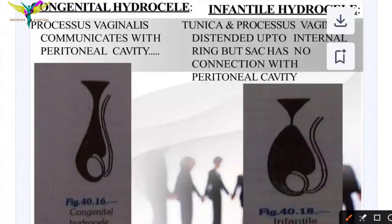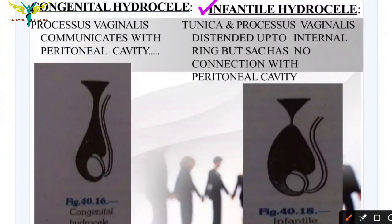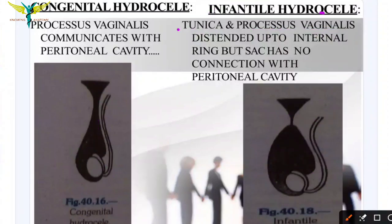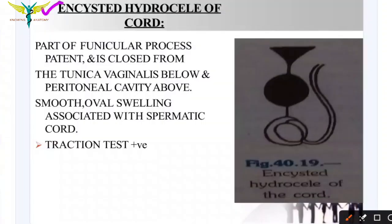In congenital hydrocele the processus vaginalis communicates with the peritoneal cavity — this communication, the abdominal or peritoneal cavity, and the testis can all be seen in the diagram. In infantile hydrocele the tunica and the processus vaginalis extend up to the internal ring, but the sac has no connection with the peritoneal cavity. The processus vaginalis is the tube or pathway that passes around the testis into the peritoneal cavity.